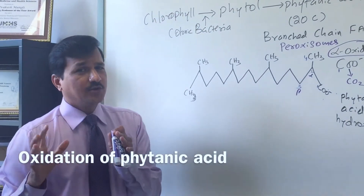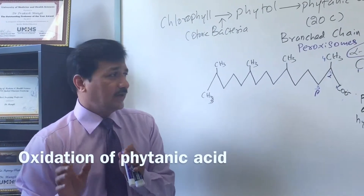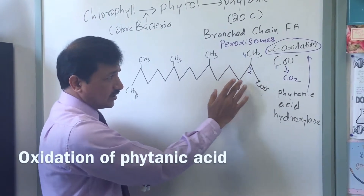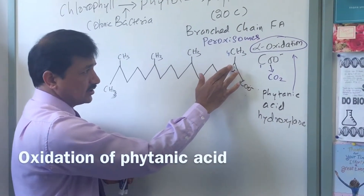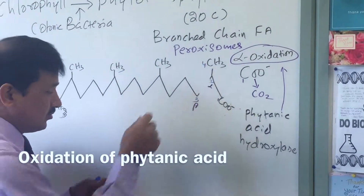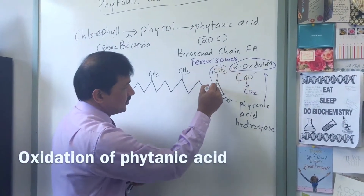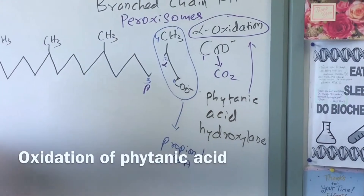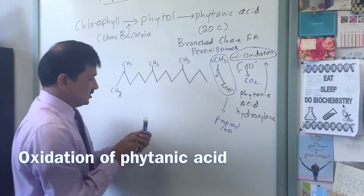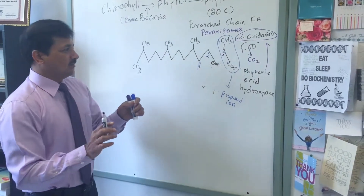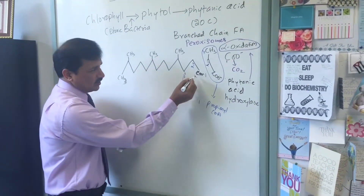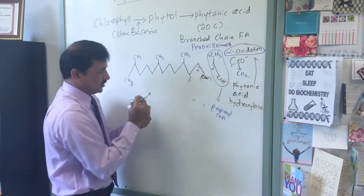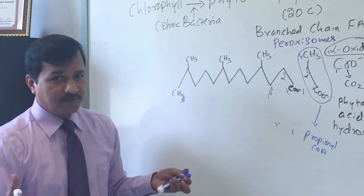In beta oxidation there are four reactions which act on the beta carbon, breaking the bond between the alpha carbon and the beta carbon. In each round of beta oxidation, a bond between the alpha and beta carbon is broken. The three-carbon compound released is propionyl-CoA. After this, the former third carbon becomes the new carboxyl carbon, the numbering resets, and we get a new alpha and beta carbon with no hindrance — so beta oxidation continues.